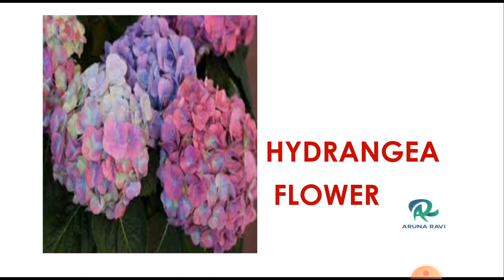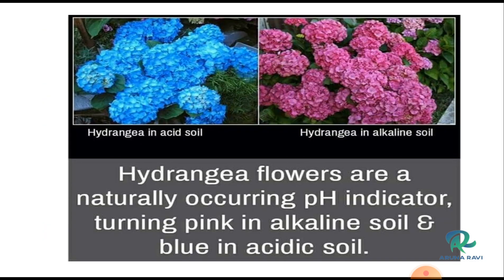Some petals of flowers are also used as natural acid-base indicators. The hydrangea flower is one such example. Hydrangea flowers in acidic soil are blue in color, and in alkaline soil they are pink in color. These petals show shades of blue color that we can identify.